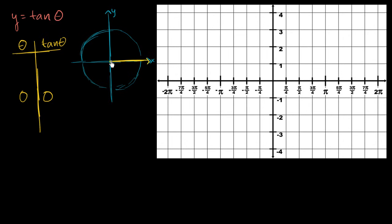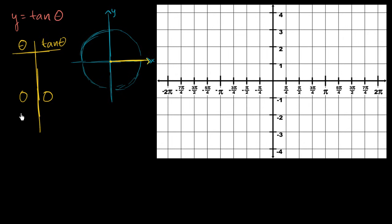Maybe the easiest one: if theta is zero radians, what is the slope of this ray? The slope is zero — as x changes, y doesn't change at all. Now let's take theta equals pi over four radians, which is a 45-degree angle. Here, your x-coordinate and y-coordinate are the same — square root of two over two each. Whatever you move in the x direction, you move the same in the y direction. So the slope of this ray is equal to one, meaning tangent of pi over four equals one.